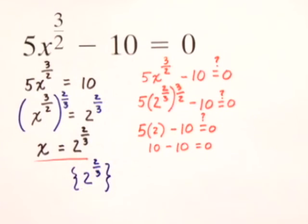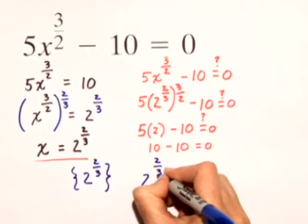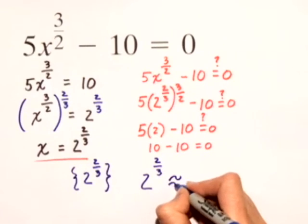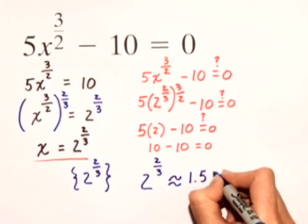Just as a side note, 2 raised to the 2 thirds power, which is our solution, is approximately equal to 1.59 on a calculator.